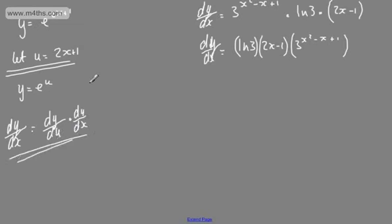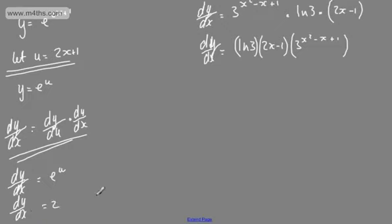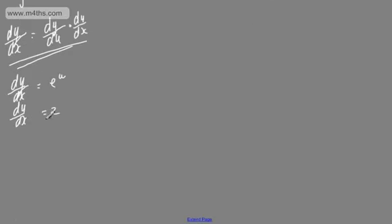So let's now use this. If we know that u is equal to 2x plus 1 and y is equal to e to the u, then dy by du — differentiating y with respect to u — gives us e to the u. And du by dx — differentiating u with respect to x — gives us du by dx equal to 2. Therefore, by the chain rule, dy by dx will be equal to 2e to the u.